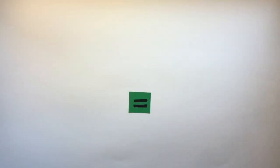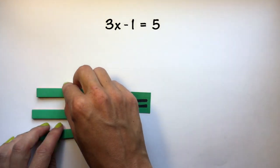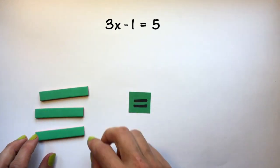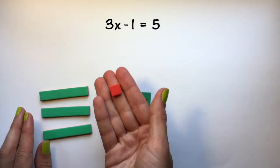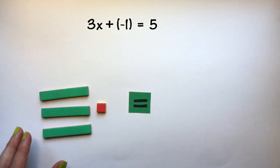Now we're going to model the equation 3x minus 1 equals 5. On one side of our equal sign we have 3x minus 1. To represent minus 1 we can use plus negative 1, so use a negative tile.